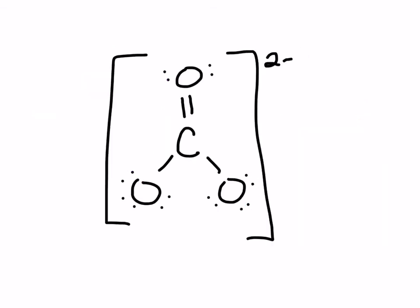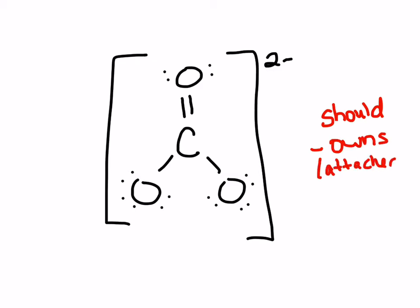Let's take a look at formal charge today and how to calculate it. The formula is: we look at the periodic table and figure out how many valence electrons an atom should have. Then from that, we subtract how many valence electrons we've actually given it that it owns in the structure — meaning the valence electrons attached to it.